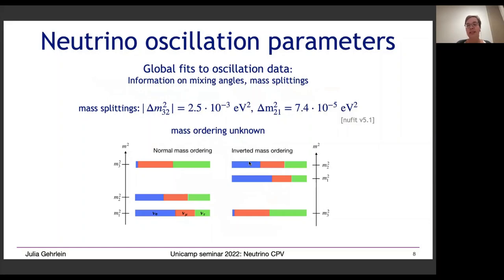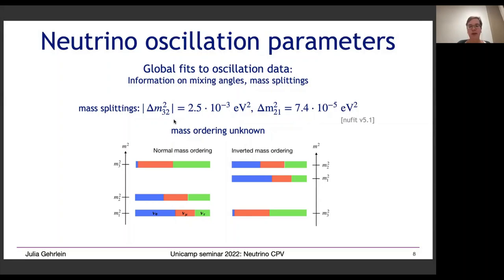Conducting global fits is important to obtain information about mixing angles and mass splittings. We have two mass splittings: a large one, delta m_31 squared, with a value of 2.5×10⁻³ eV², and a smaller one, delta m_21 squared, with a value of 7.4×10⁻⁵ eV². So far we only know the sign of the smaller mass splitting. We do not know the sign of delta m_32 squared — the neutrino mass ordering — meaning we don't know whether the lightest eigenstate contains the most or least electron neutrino flavor.